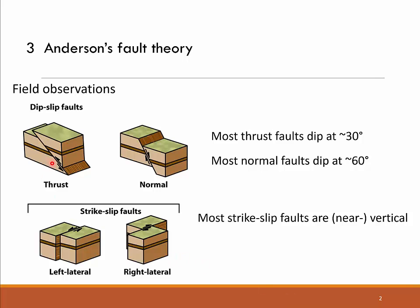The dip-slip faults obviously slip along the dip line, like this thrust fault that we see here, or the normal fault that we see here — the movement is along the steepest lineation, the dip line on the fault surface. In strike-slip faults, left-lateral or right-lateral faults, also called sinistral or dextral faults, the slip direction is horizontal, parallel to the strike line of the fault plane.